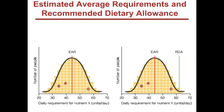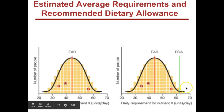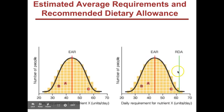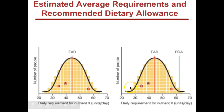Let's start out with estimated average requirements and recommended dietary allowance. These curves show number of people and daily requirement of a nutrient — we'll just call this one Nutrient X. Each point on these graphs, A, B, C, etc., represents the requirement of Nutrient X for a particular person. They follow a normal distribution of needs for Nutrient X.